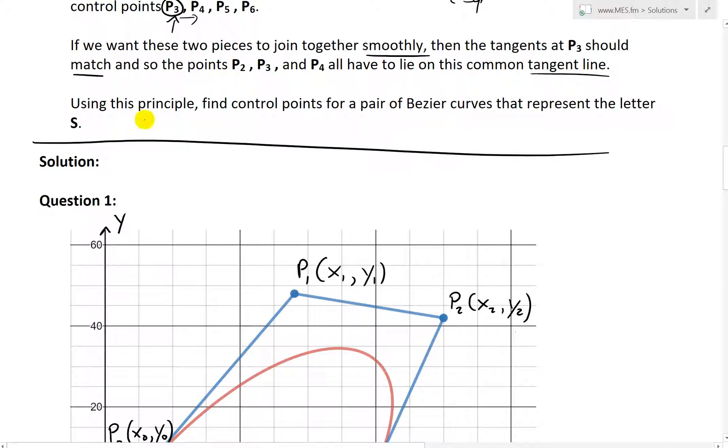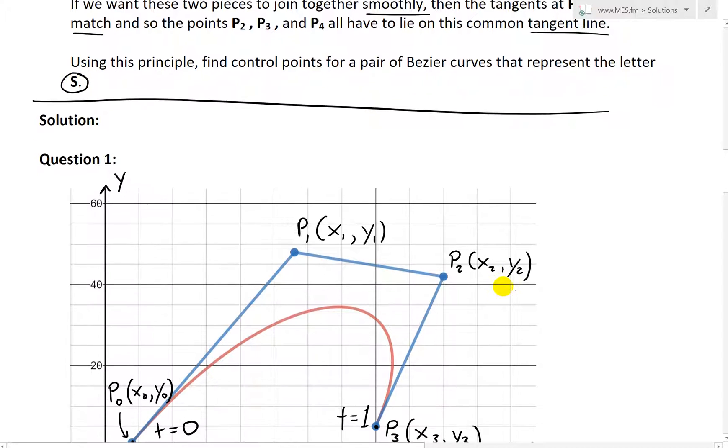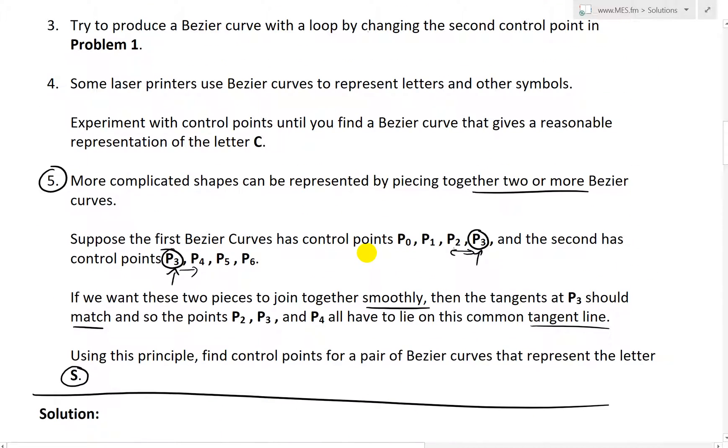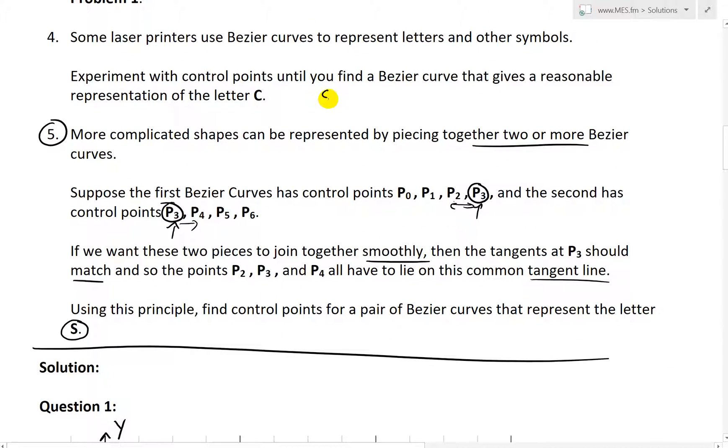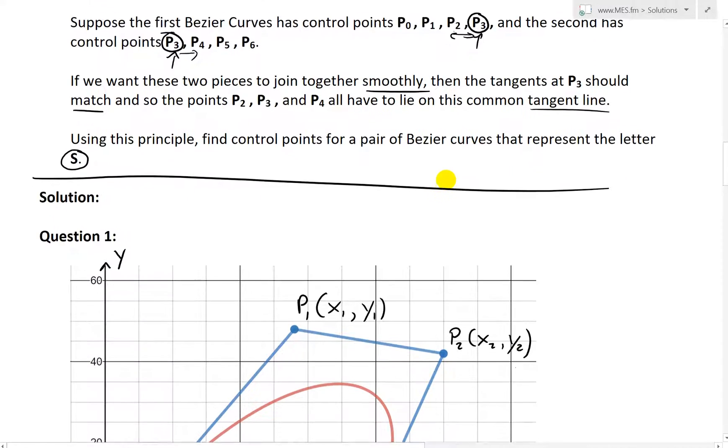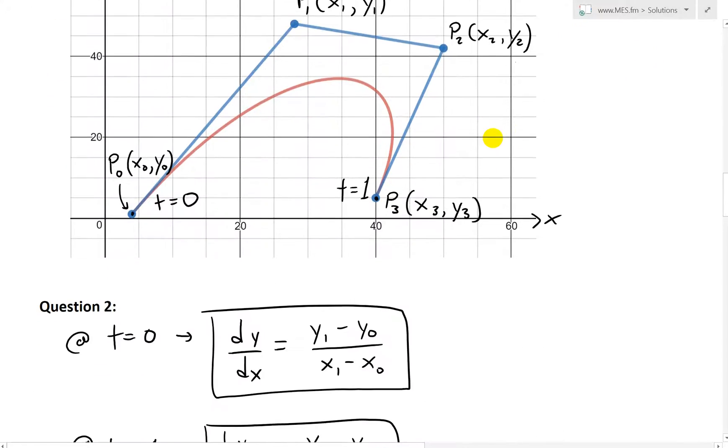Now the question states, using this principle, find control points for a pair of Bezier curves that represent the letter S. So basically what we could do is, we have a letter C here. So we could take this and basically duplicate it, or just modify it a bit so it looks better like an S. So we can take the C, and then flip it, and pretty much get an S. So that's what we will do in this question.